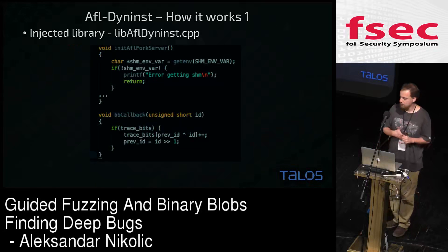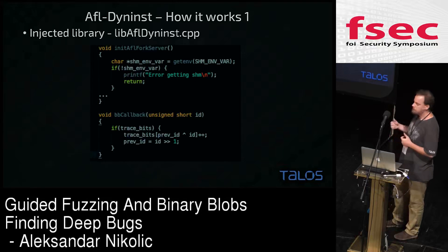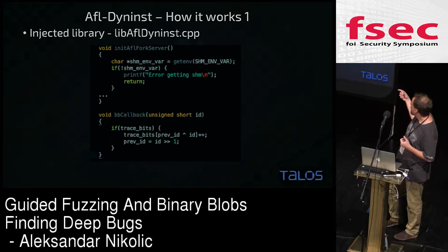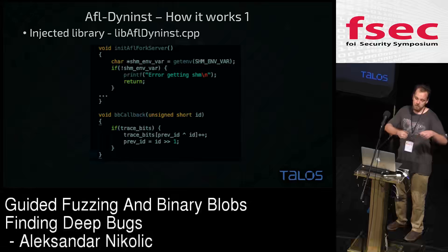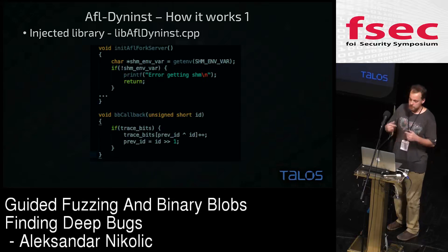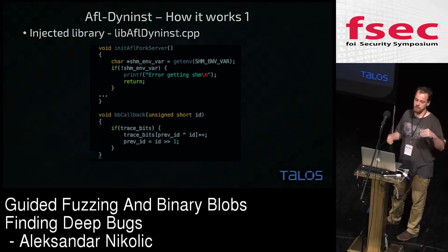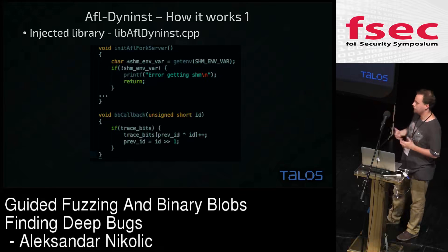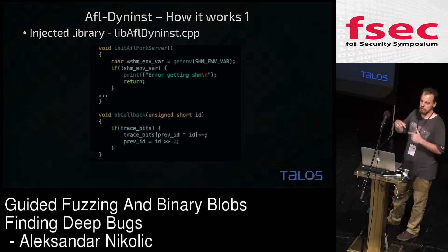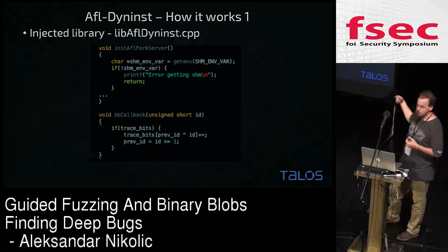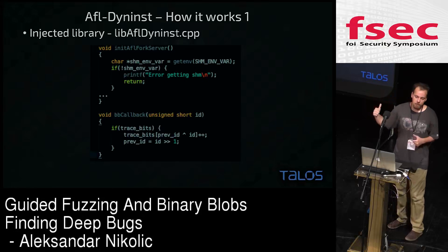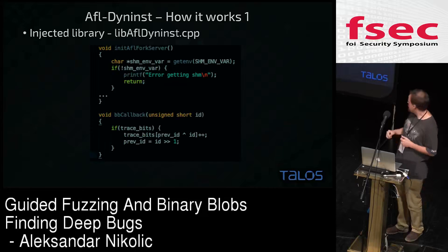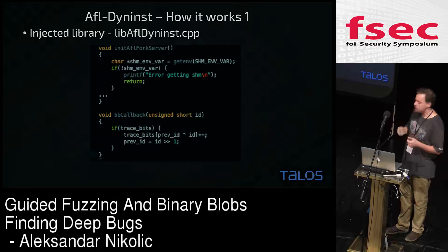To see how it works — it's relatively simple. On one hand, we have this lib-afl-dyninst library, which gets injected into the target binary and has basically two functions. One is init-afl-fork-server, which injects the fork server that AFL needs at the start of the text segment — so at the first instruction in the actual process, it jumps to the fork server and forks from there. The second function is the basic block callback, which gets called each time a new basic block is hit to record the edge transition — similar to AFL's own instrumentation.